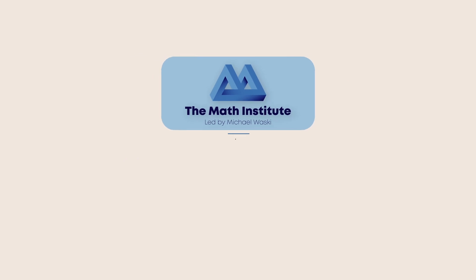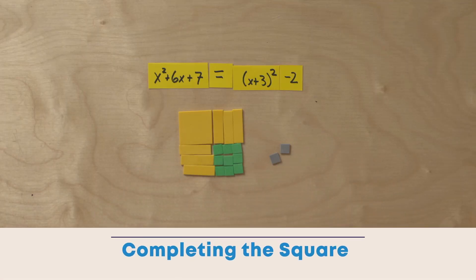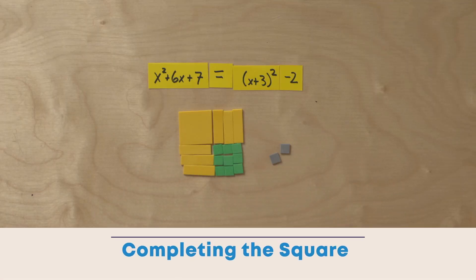This process is called completing the square. Why? Because we can make a square — or as close as we can to a square — and it's going to be incomplete in some way. So we make the square, and then we have a little bit left over. That's how we can rewrite expressions that aren't factorable. Let's try one more example.